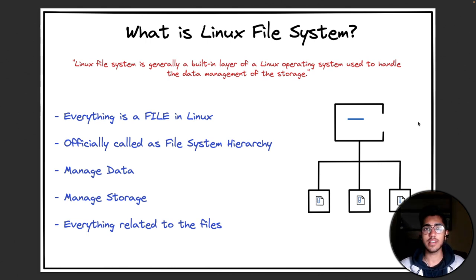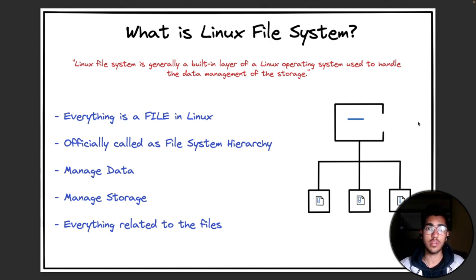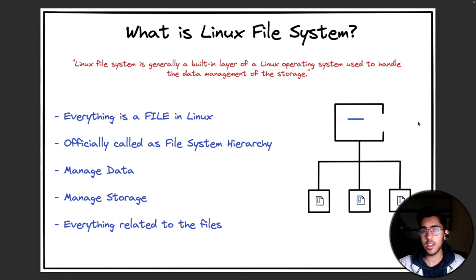The file system is officially called the file system hierarchy. Why hierarchy? Because everything starts from one root and branches out to different kinds of directories and files — that is why the hierarchy name came from. Everything related to files is managed by the Linux file system, and the file system is not just for the Linux operating system; it is also present in Windows or any other operating system. There are different kinds of file systems out there, but we'll be covering specifically the Linux file system in this particular video.